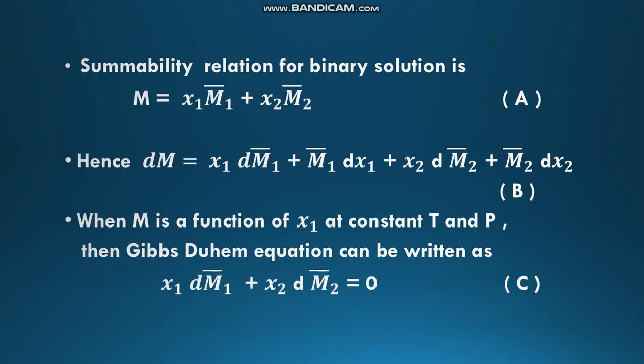The summability relation for a binary solution can be written as M equals x1 M1-bar plus x2 M2-bar. Differentiating this equation: dM equals x1 dM1-bar plus M1-bar dx1 plus x2 dM2-bar plus M2-bar dx2. When M is a function of x1 at constant temperature and pressure, the Gibbs-Duhem equation can be written as x1 dM1-bar plus x2 dM2-bar equals zero.